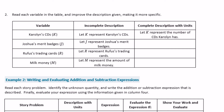Number two: read each variable in this table and improve the description, making it more specific. For Carolyn's CDs, K — K represents Carolyn's CDs — we improve it to: let K represent the number of CDs Carolyn has. We're just trying to find the total number of CDs, so we add the word 'number.' Then Joshua's merit badges: let J represent the number of Joshua's merit badges.